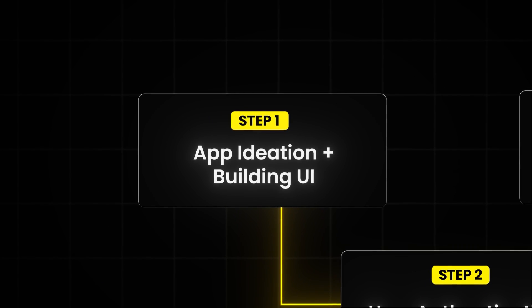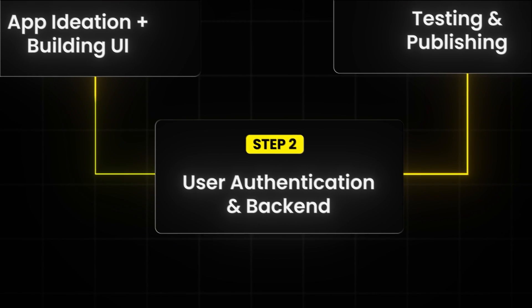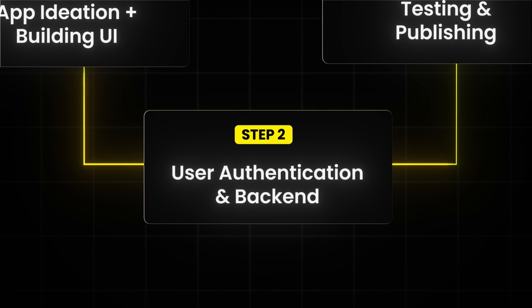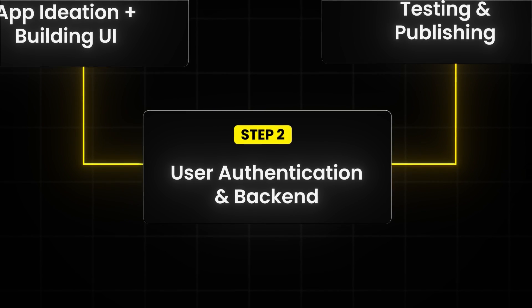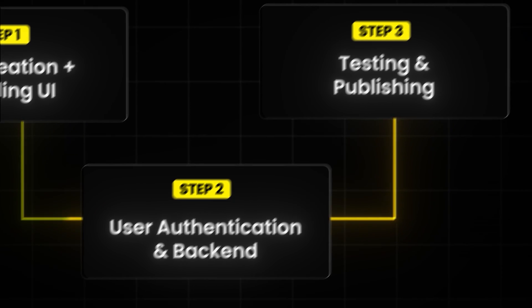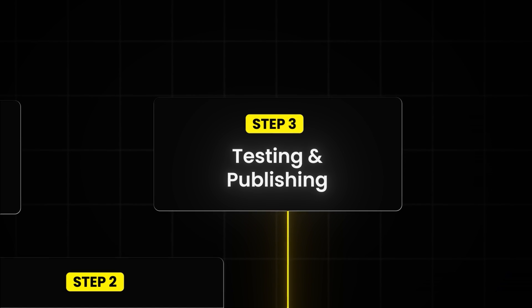First, we will use AI to generate the app idea, and then we will build the full UI and the app features. The second step is to add user authentication and connect a real backend with Supabase. And finally, we will test out the app on our phone and publish it to the App Store and the Play Store.